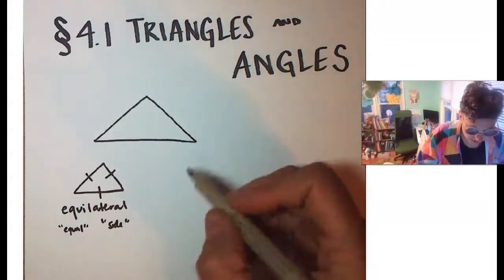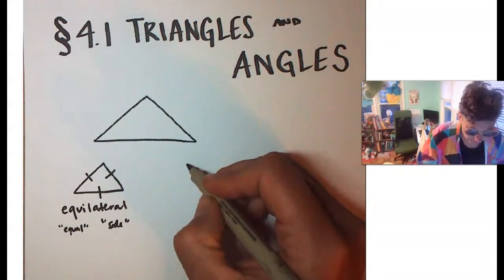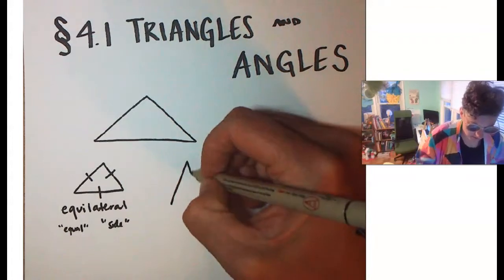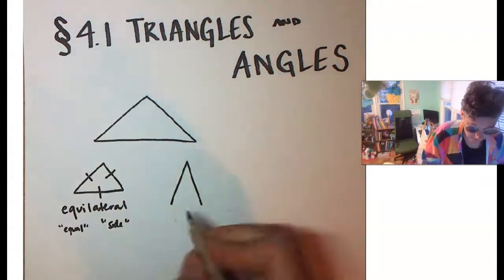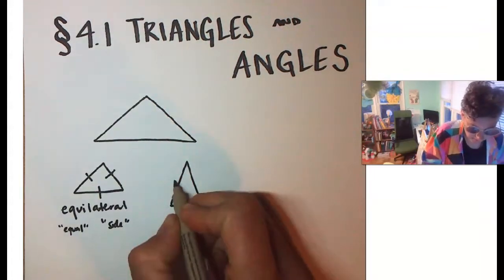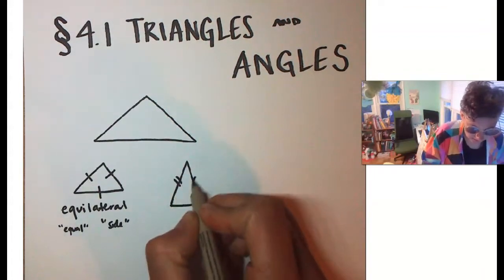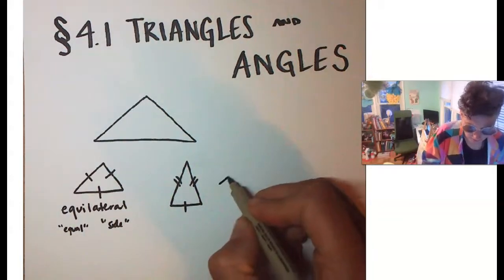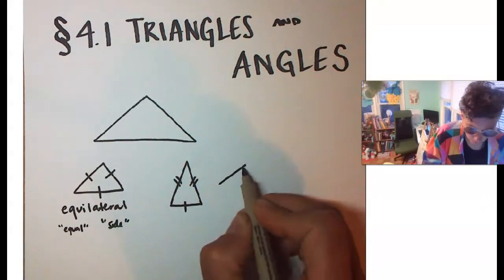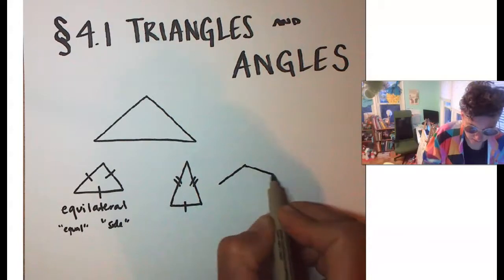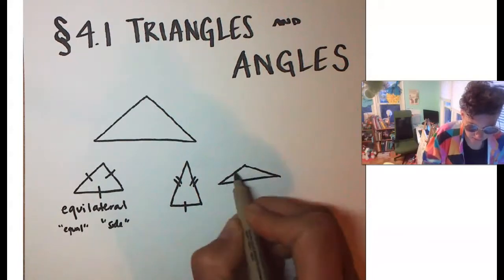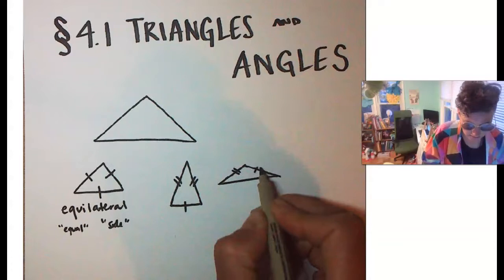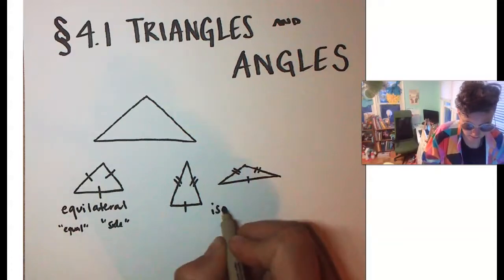We could also have two sides the same — two of the sides are the same and the third side is something different. That triangle could also look wide. Two sides the same, third side is different — this is called an isosceles triangle, where two sides are the same.